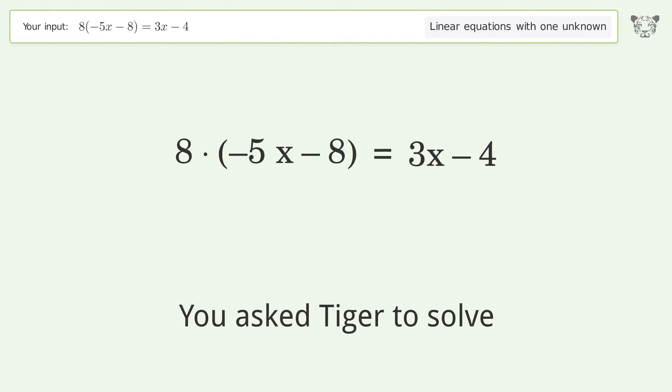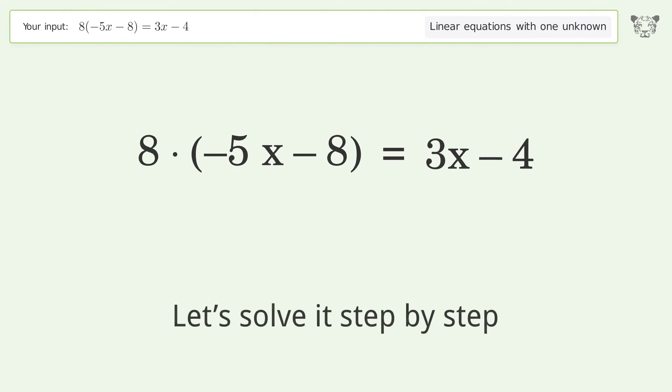You asked Tiger to solve this. It deals with linear equations with one unknown. The final result is x equals negative 60 over 43. Let's solve it step by step.